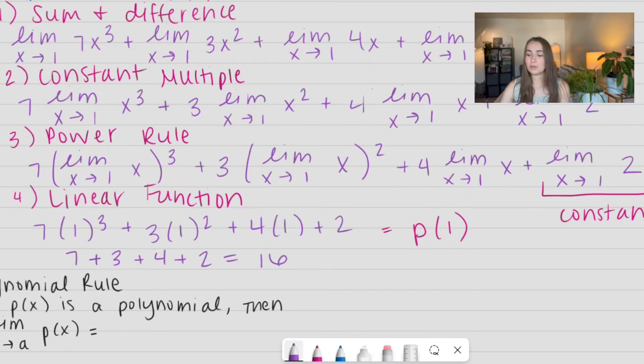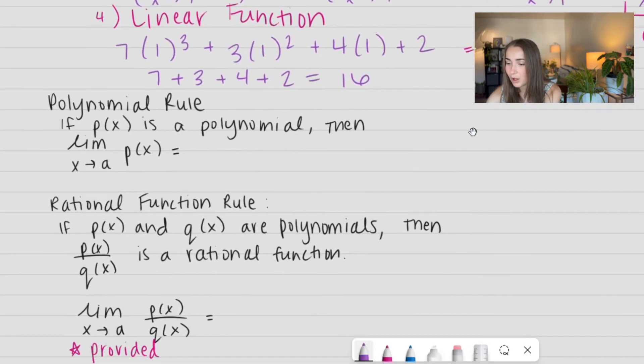So, this is the rule. Let me go ahead and scroll down here real quick. If P of X is a polynomial, then the limit as X approaches A of P of X is just P of A. We're just going to plug in that X value and solve it out. So, this is a really great rule to shortcut so we don't have to use all of those basic rules. We can just sum them up together and say, hey, it's a polynomial. I'm just going to go ahead and evaluate where it is.